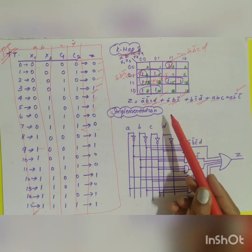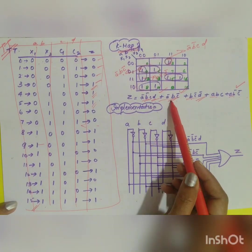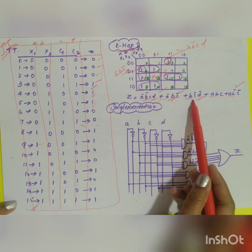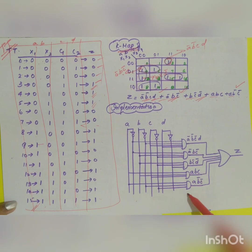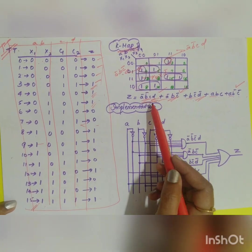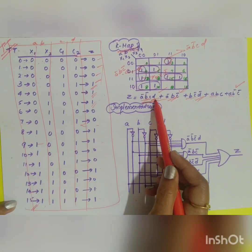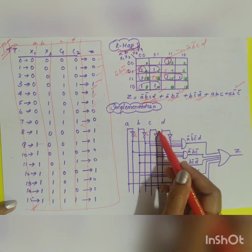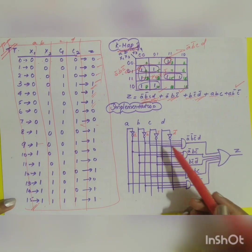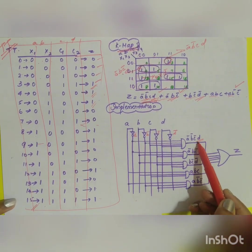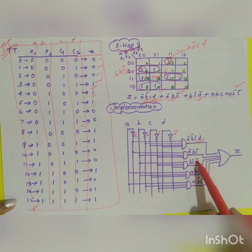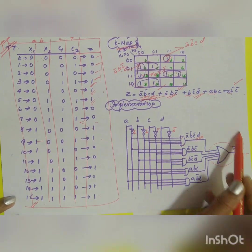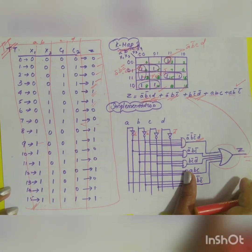To draw the logic gate circuit, connect all inputs to AND gates — one for each product term, with NOT gates on complemented variables. There are five AND gates total. Finally, connect all AND gate outputs to a single OR gate to get the output z. This gives you the minimum AND-OR realization of the circuit.